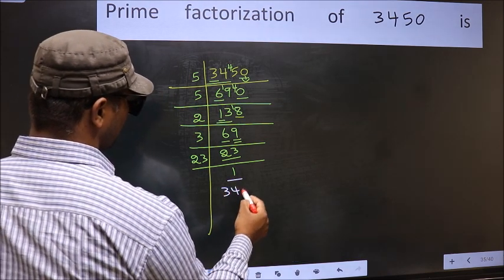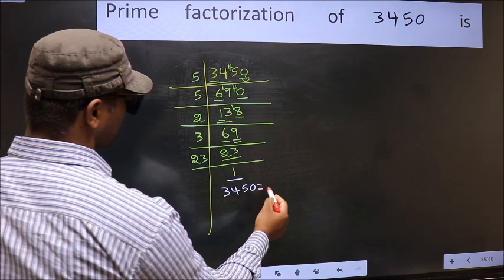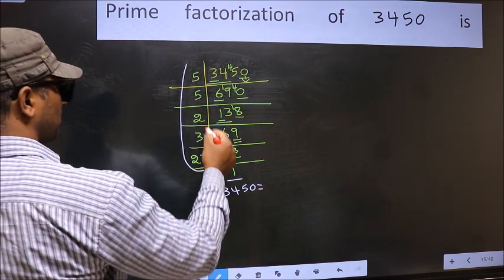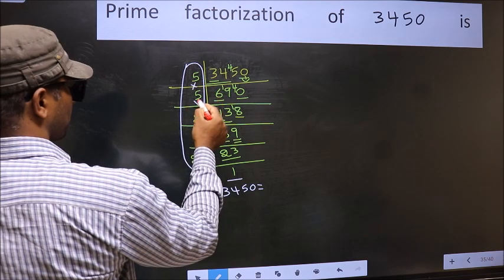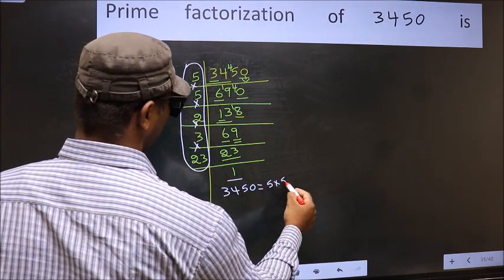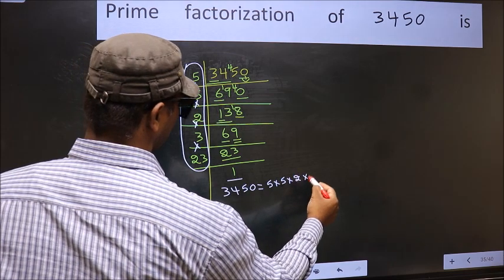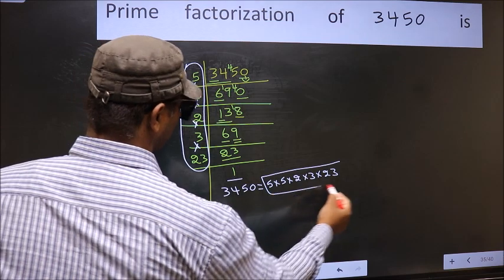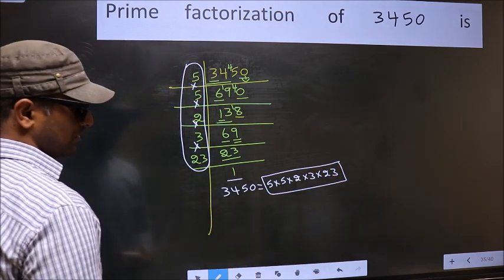So the prime factorization of 3450 is the product of these numbers. That is 5 into 5 into 2 into 3 into 23. This is the prime factorization of 3450.